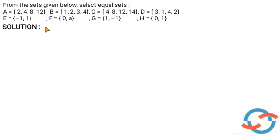We have several sets. There are no equal sets initially. We compare the elements. A is equal to set of 2, 4, 8, 12.